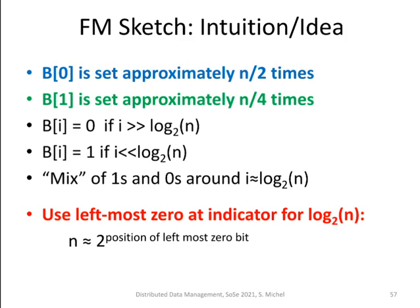And the idea why this works I have already mentioned. If you look at the leftmost entry in our B vector, the first entry, we have already seen or discussed that this is approximately set n divided by 2 times, and then the next one is set n divided by 4 times and so on.